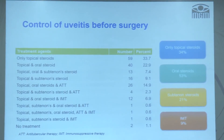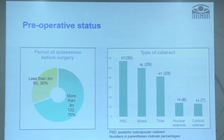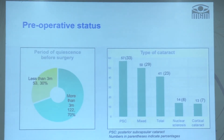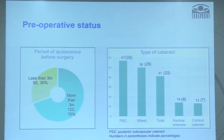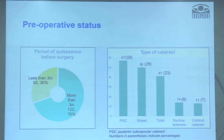A variety of immunosuppressive therapies, both topical and systemic, were used to control inflammation before surgery. Only topical steroids were used in 34% of cases, while immunosuppressive therapy such as azathioprine was used in around 10%. We waited for three months of uveitis control before surgery in nearly 70% of patients, but in 30% — due to advanced cataract — we had to operate earlier, within one to two months.